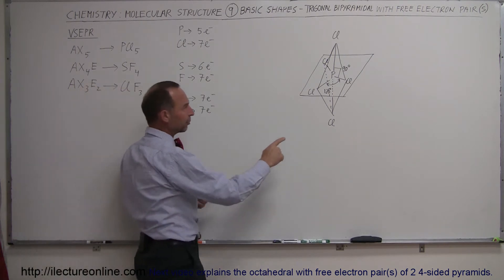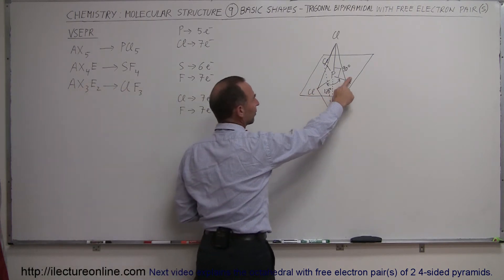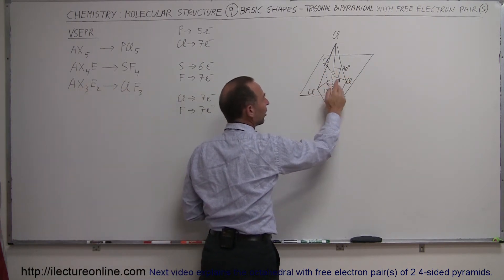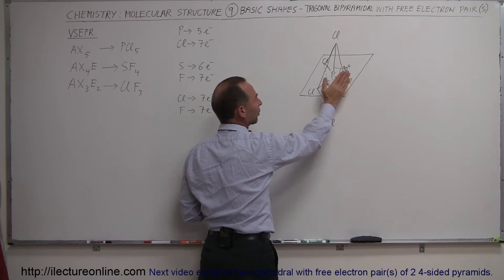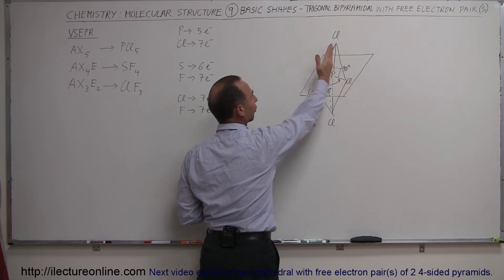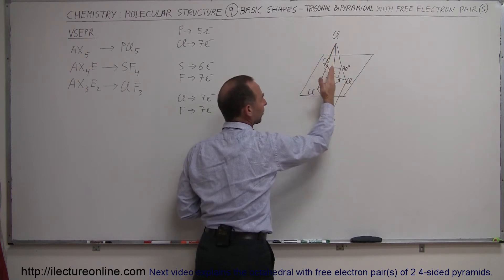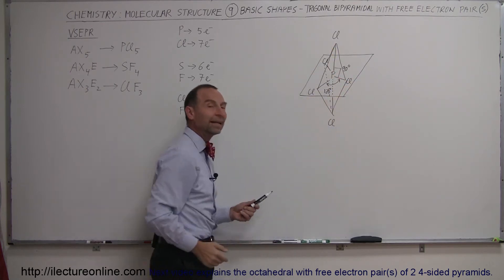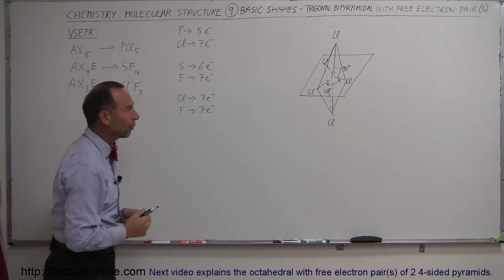Notice the bond angles between the chlorines in the equatorial plane are 120 degrees each. The bond angles between the equatorial plane and the atom straight up or straight down are 90 degrees in both directions.